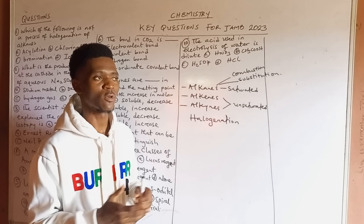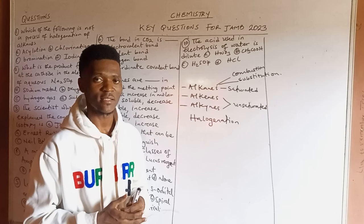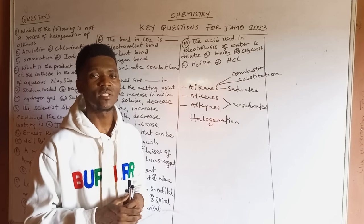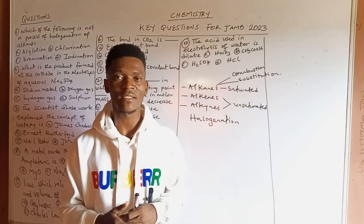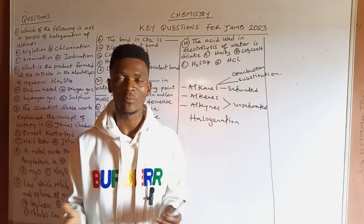The halogens are the salt-formers, the group seven elements: fluorine, chlorine, bromine, iodine, and astatine. However, alkanes do not undergo halogenation with fluorine or astatine. For fluorine, it is the most reactive element in chemistry, so alkanes don't react with it. For astatine, it is radioactive, meaning it undergoes nuclear reactions rather than chemical ones, because radioactive elements have unstable nuclei that easily disintegrate, releasing radiation.